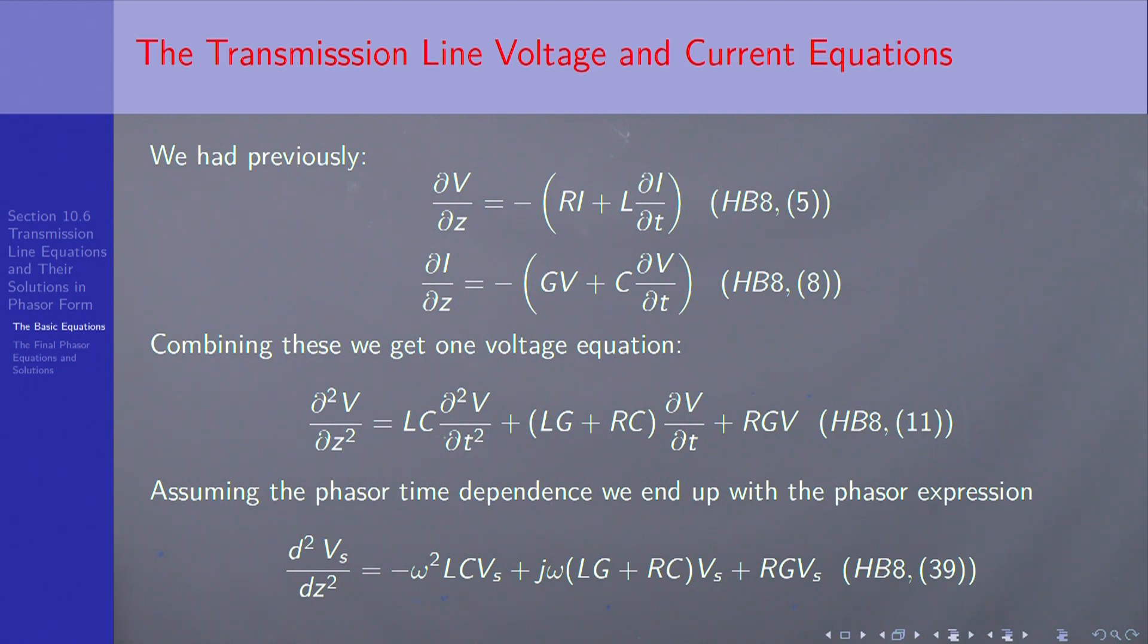So previously, we had HB8(5) and HB8(8), and now we combine the equations by doing the right differentiations, and we've done that before, and we get number 11.